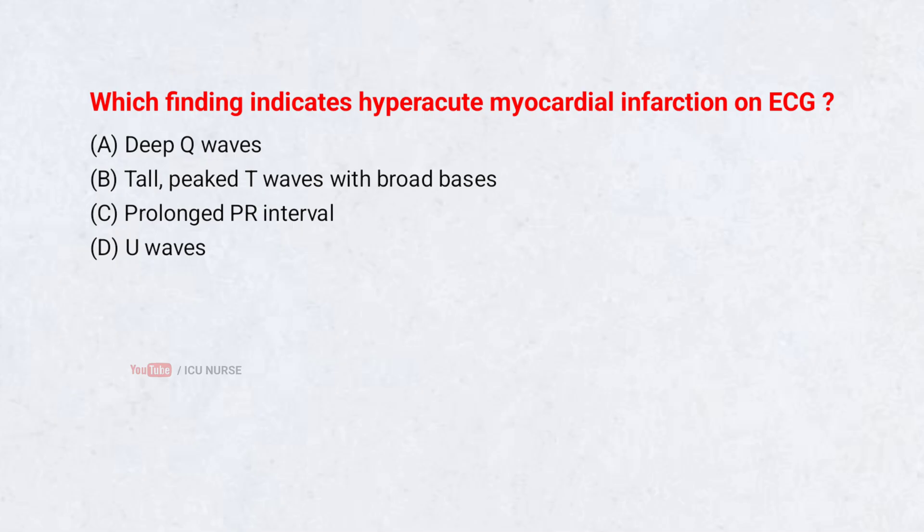Which finding indicates hyperacute myocardial infarction on ECG? A. Deep Q-waves, B. Tall, peaked T-waves with broad bases, C. Prolonged PR interval, D. U-waves. Correct answer: B. Tall, peaked T-waves with broad bases.